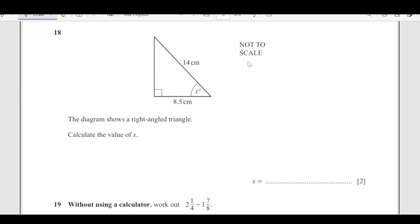Number 18: The diagram shows a right angle triangle. Calculate the value of x. We're looking for angle x. This is adjacent and this is hypotenuse, so we use SOHCAHTOA. We have adjacent which is 8.5 and hypotenuse which is 14, so we use cosine. cos x equals adjacent over hypotenuse, which is 8.5 over 14, equals 0.6071. Therefore x is 52.6 degrees.